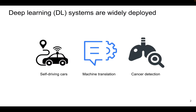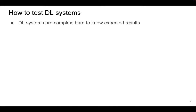Deep learning systems have been widely deployed in many applications, such as self-driving cars, machine translation, and cancer detection. As a result, the reliability and security of deep learning systems are of vital importance. However, it remains a challenge to test deep learning systems, as deep learning systems are often complex and it's hard to know the expected results.